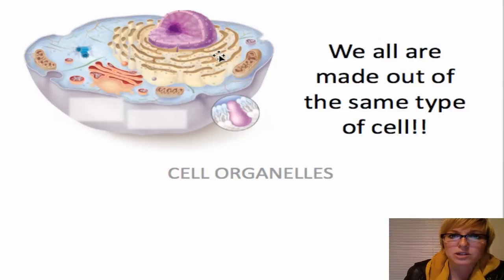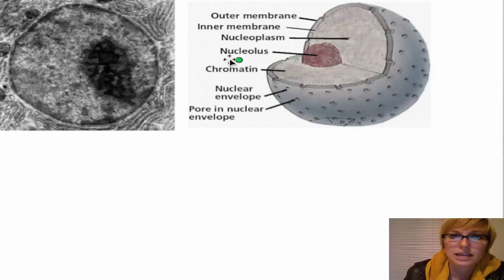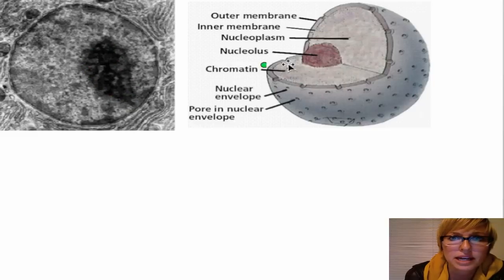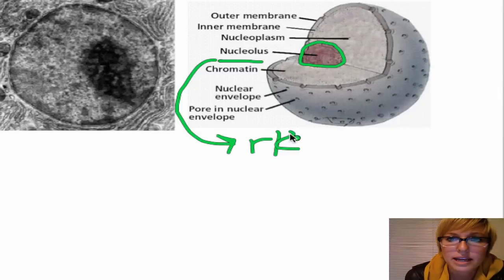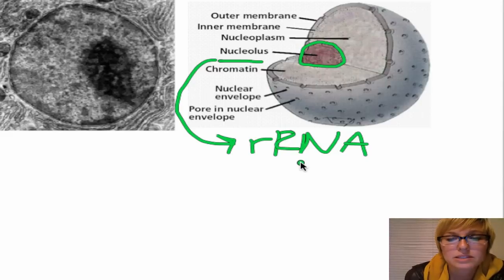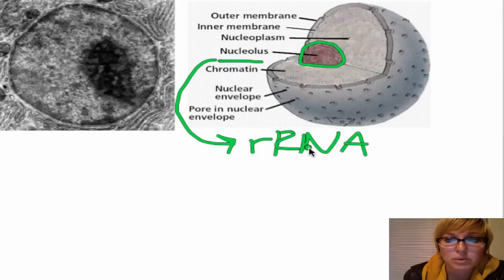Let's take a deeper look at the nucleus. This is a TEM microscope image of a nucleus and we see that there's this dark concentration of material here. That dark concentration of material is called the nucleolus. And the nucleolus is where our RNA — the little 'r' stands for ribosomal RNA — is assembled and secreted in little bits, and it later forms what we know as ribosomes.